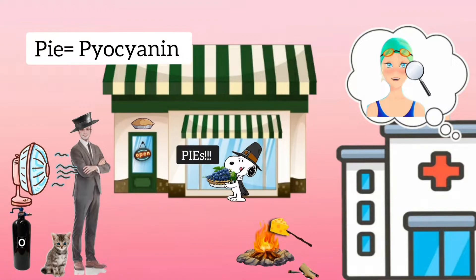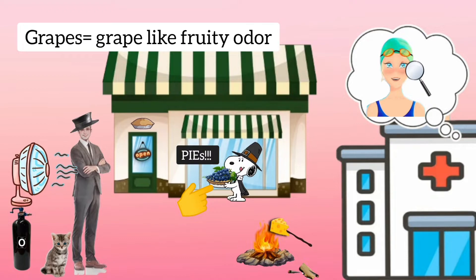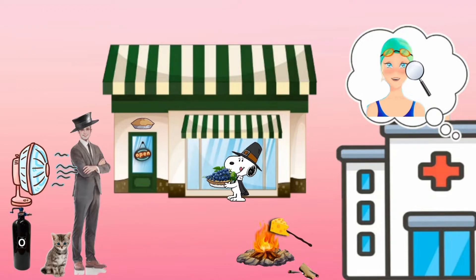The man has come to buy some pies from this pie shop. The pies remind us of pyocyanin, which is a blue-green pigment, just like the color of this shop. You can see they are putting grapes inside the pies — this reminds us that Pseudomonas gives a fruity, grape-like odor.